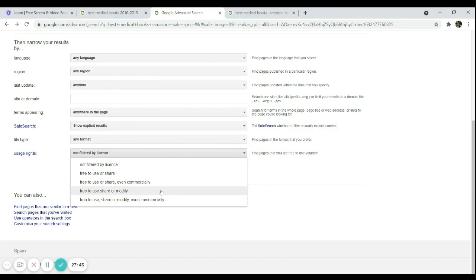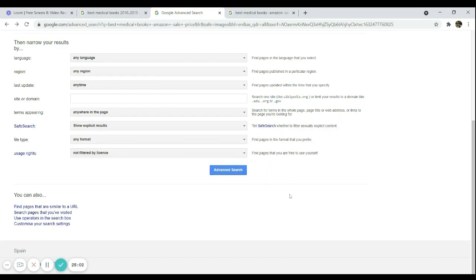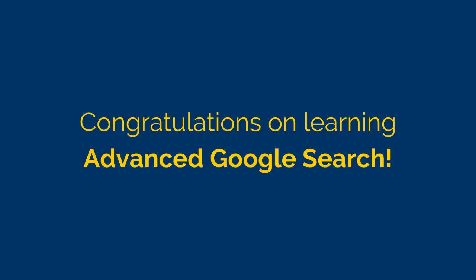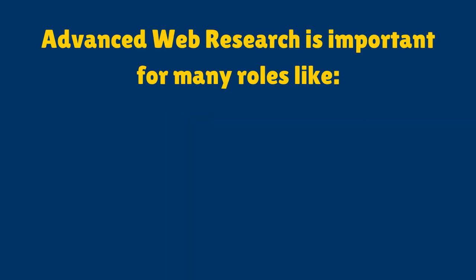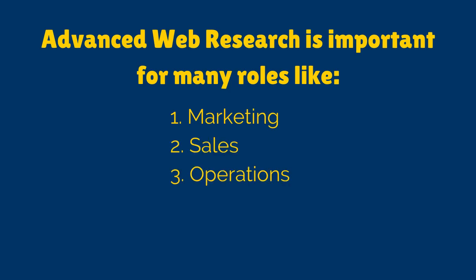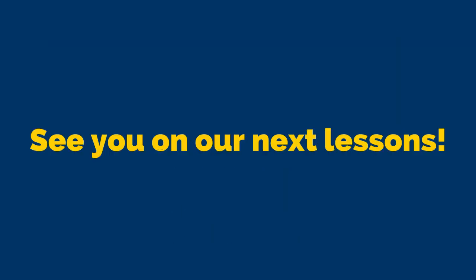That's it for our advanced web research lesson. Now you know how to use the advanced search features of Google to speed up your researching process and refine search results. Remember, being good at web researching is a skill important not just to being a VA, but also to marketing, sales, operations, IT, and many more. See you in the next lesson, where we'll explore the second skill you must have as a VA: email management.